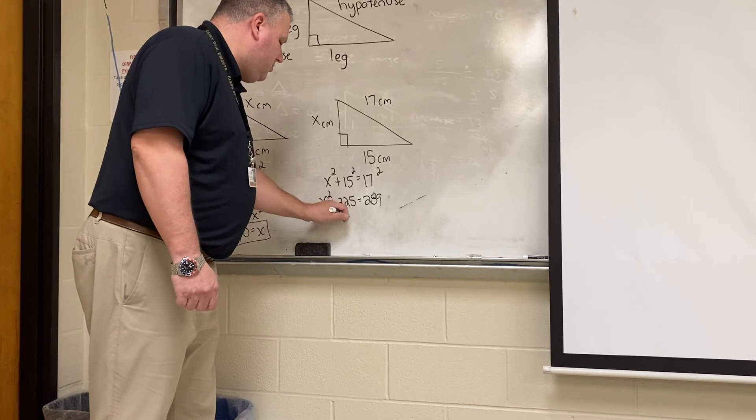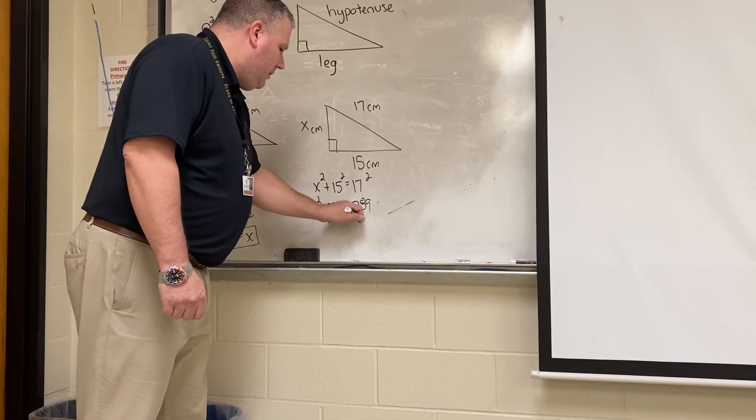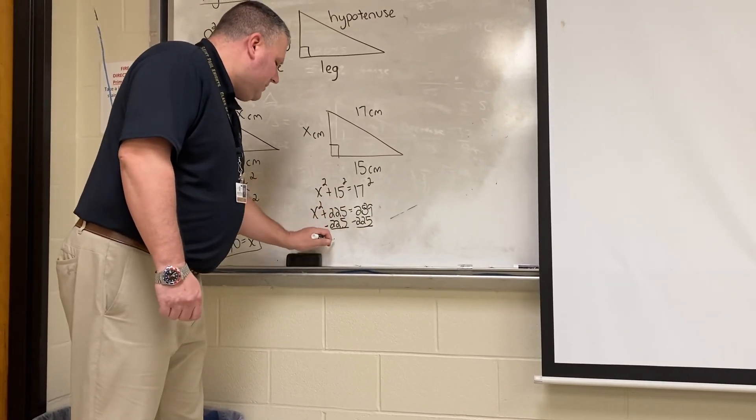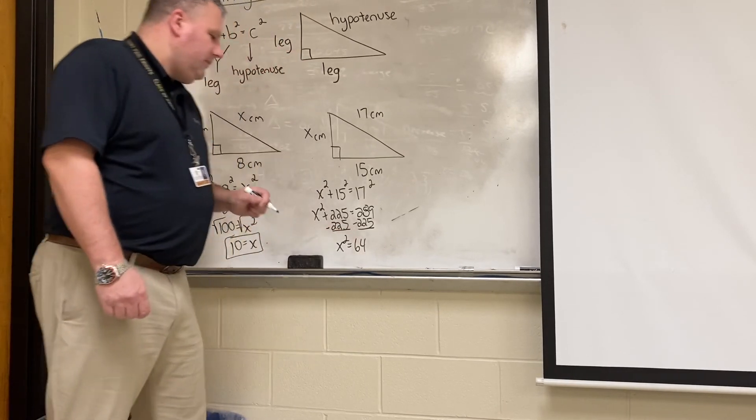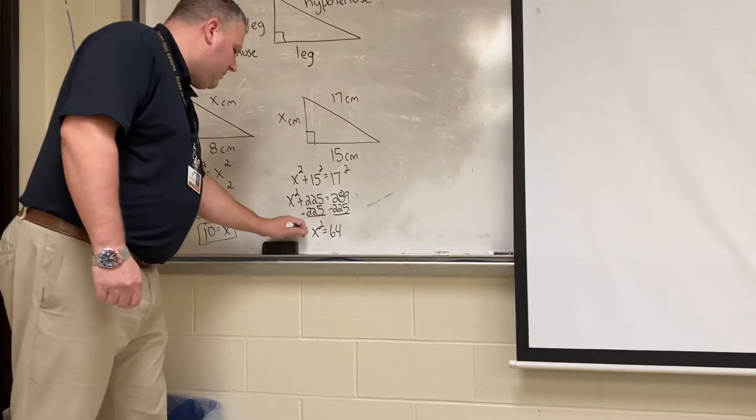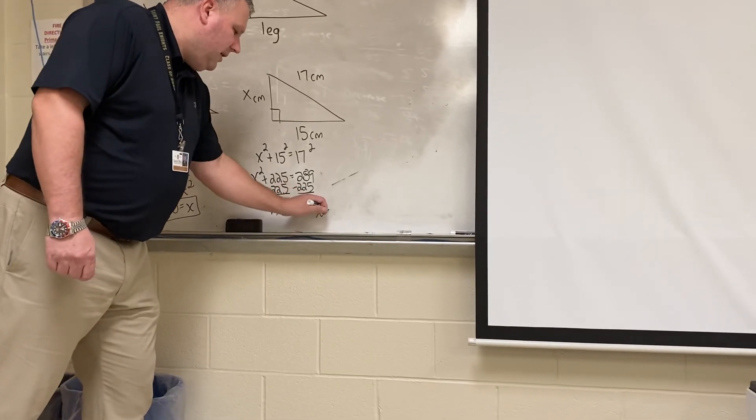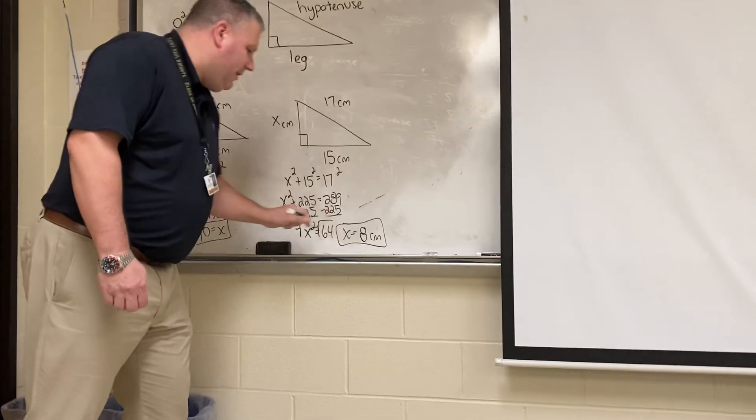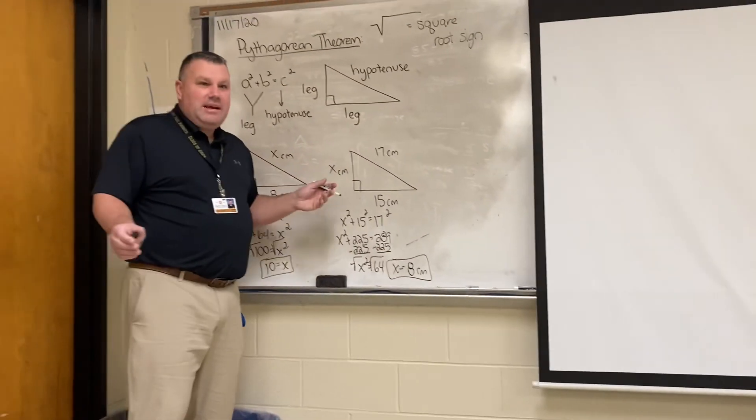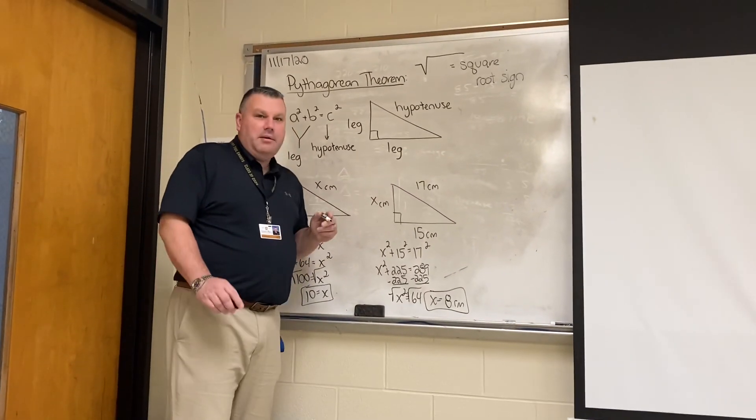So I have to subtract the 225 in order to get the x squared by itself. So x squared is equal to 64. I'm going to take the square root of both sides. x is equal to 8. Again, regardless of where the x is, it's always equal to the hypotenuse.